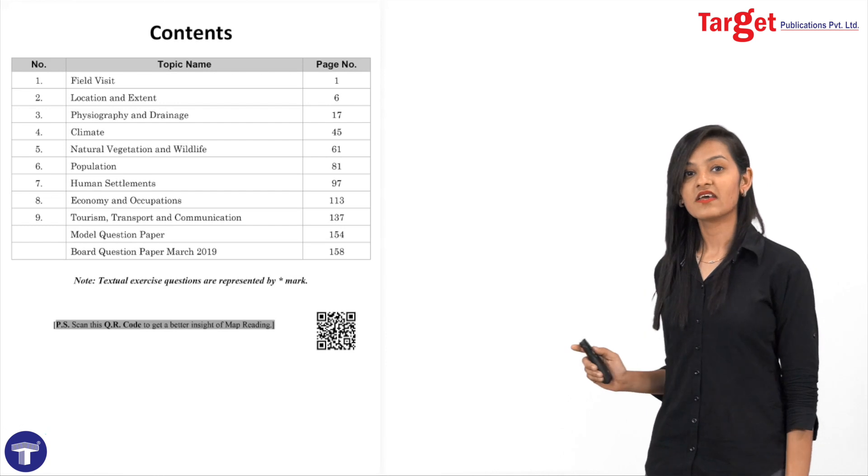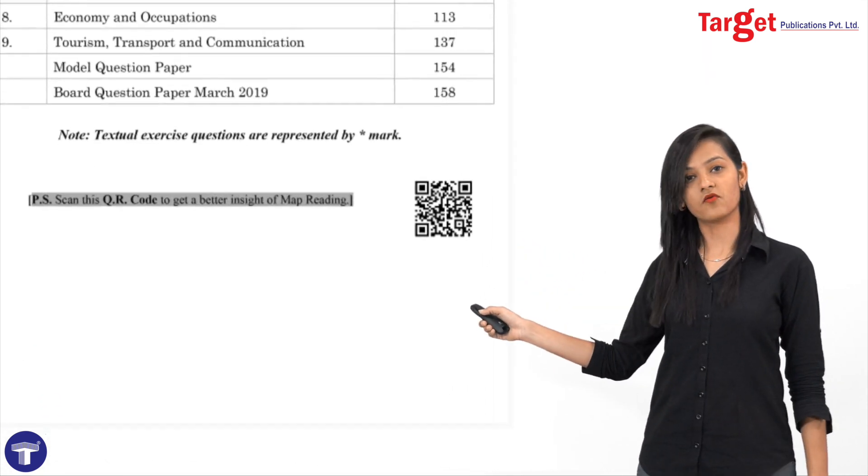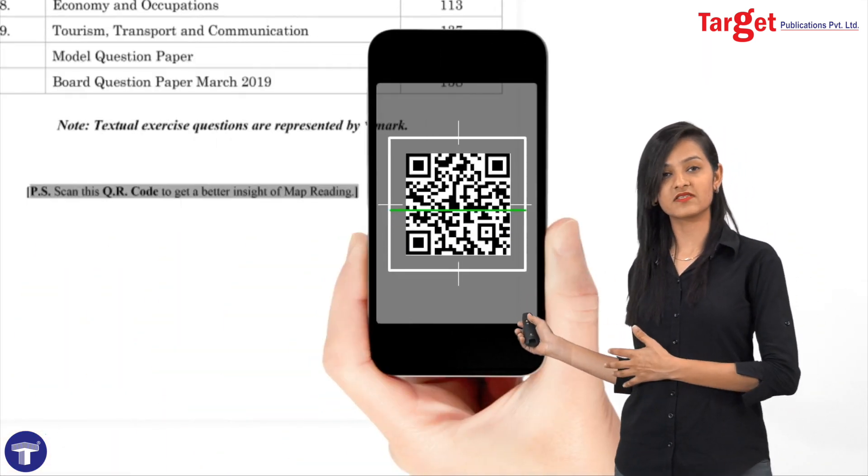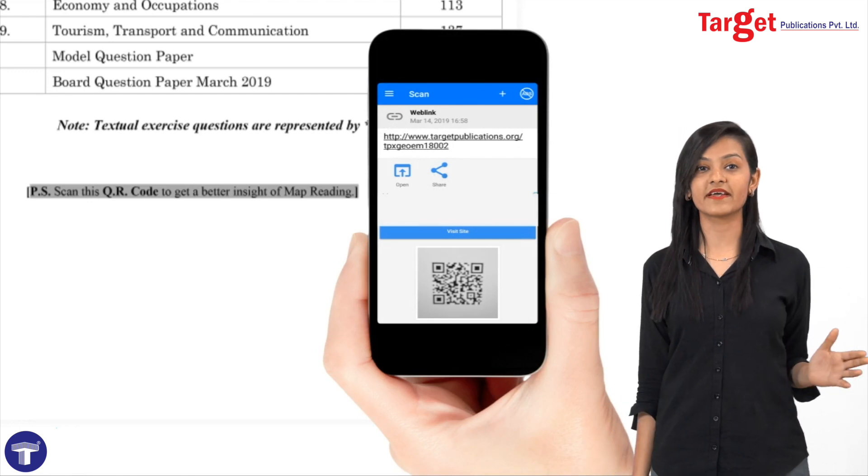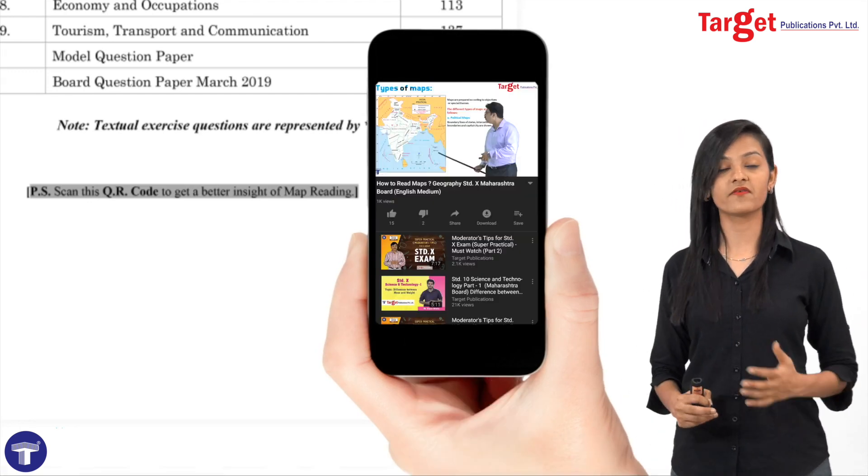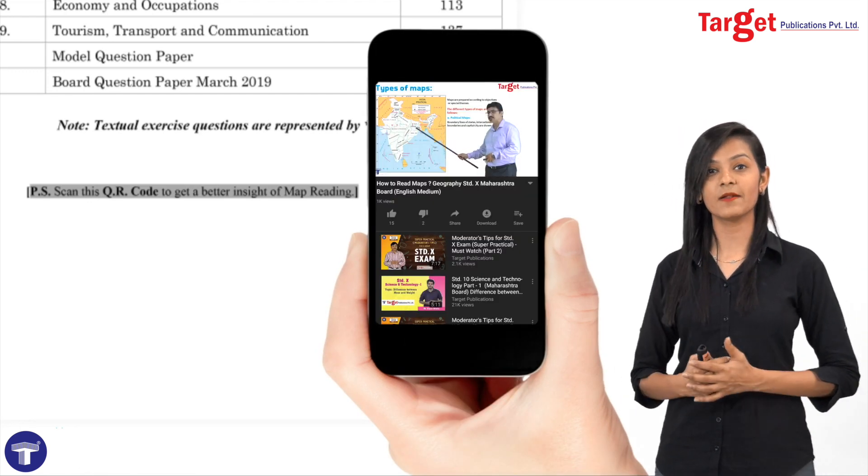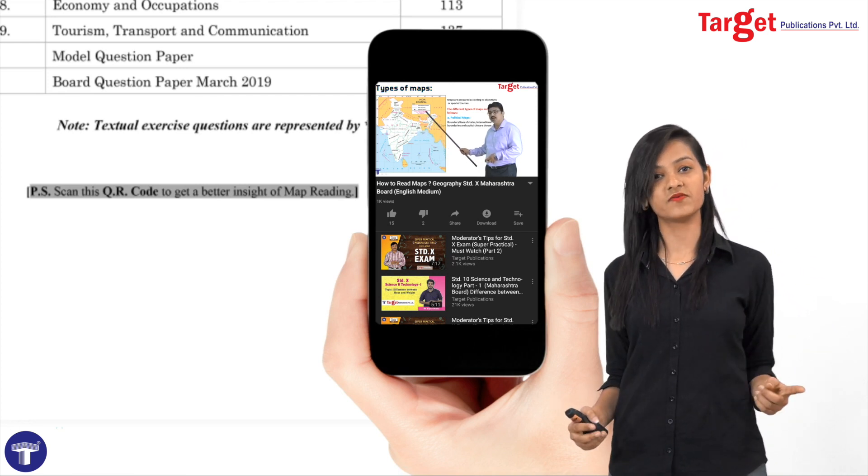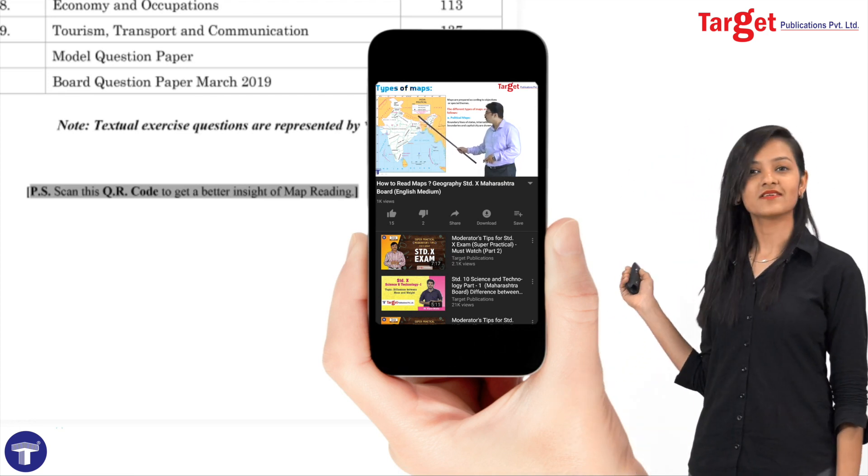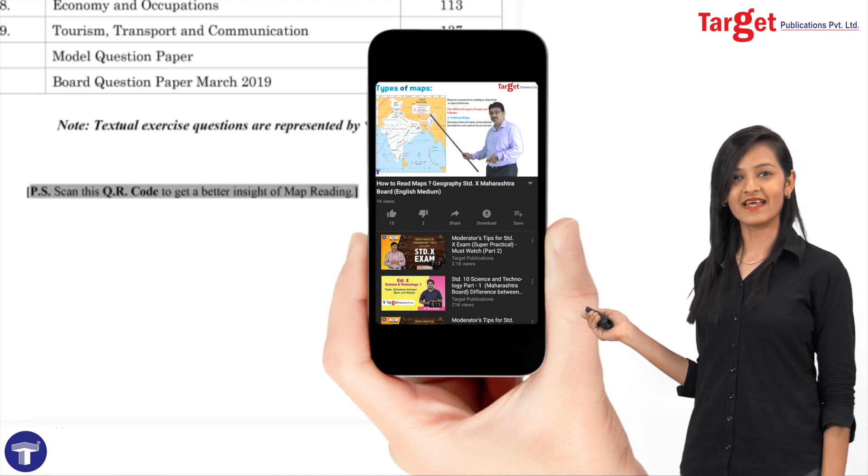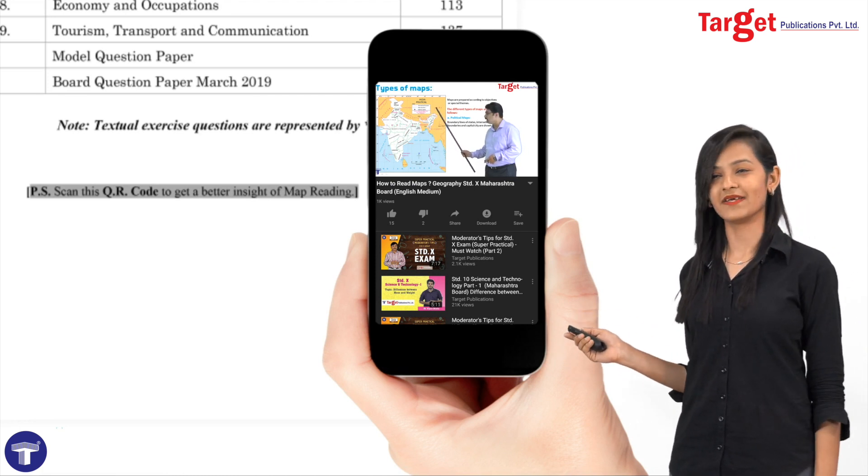In Target notes, we have given a QR code. This QR code, once you scan students, you will be directed to a video, which we have given only for you, that can help you learn the basics of observing the map. All you have to do is, just open Target notes, scan this QR code, and you get the updates.